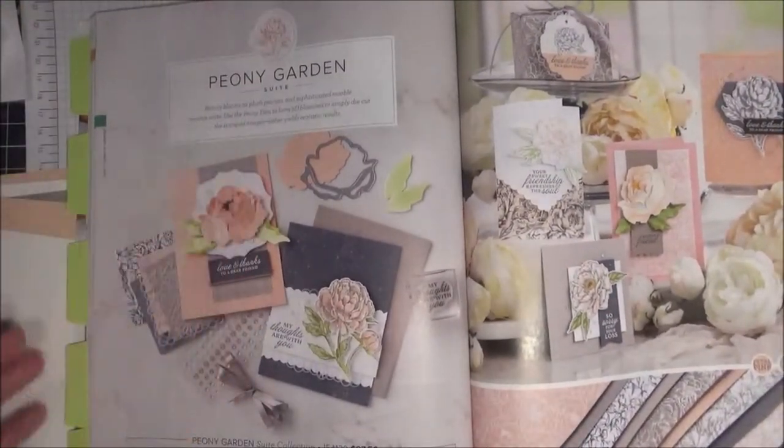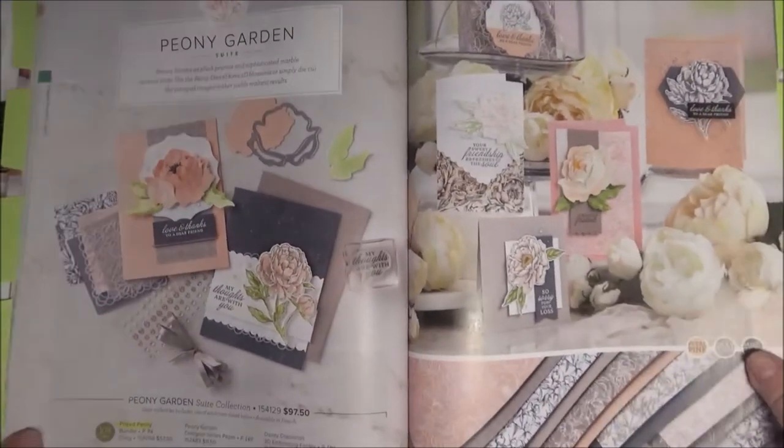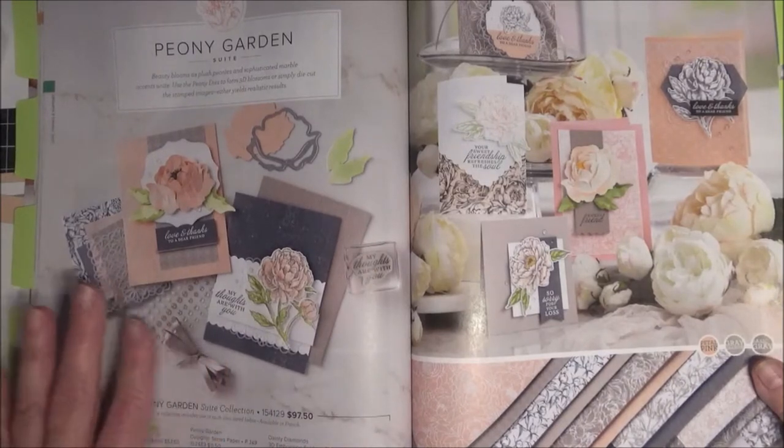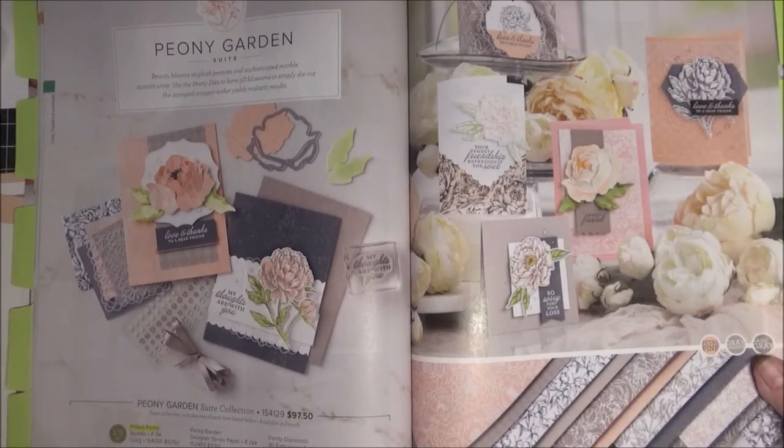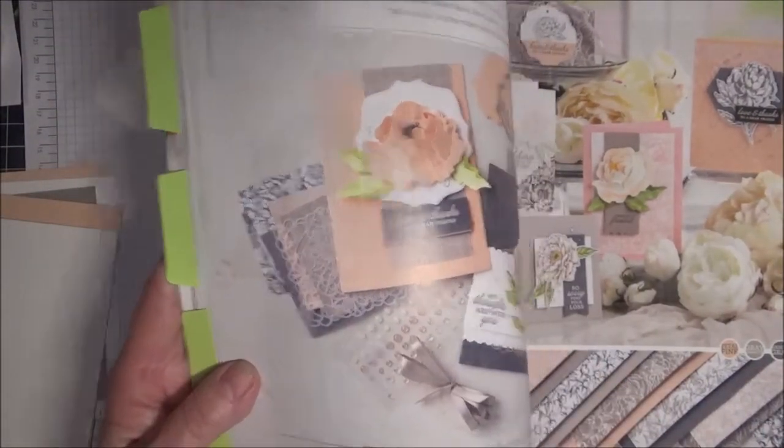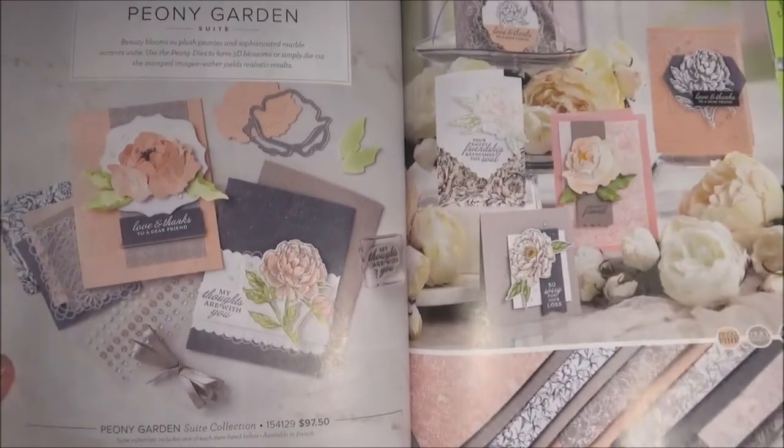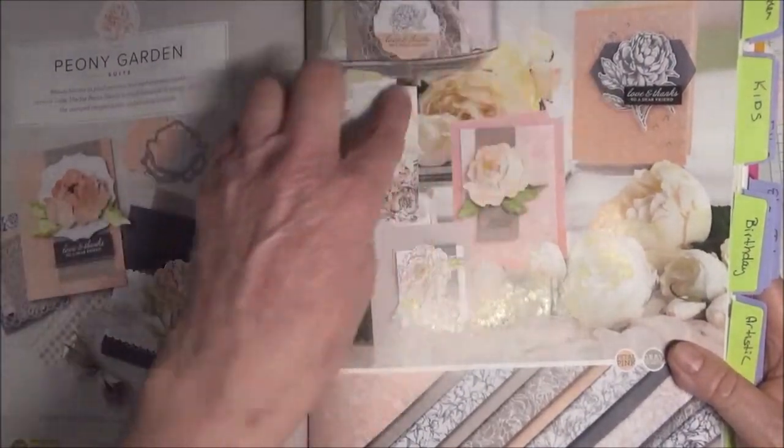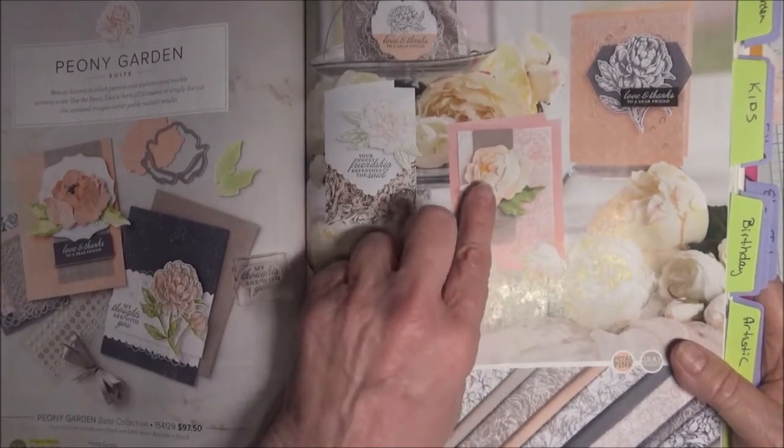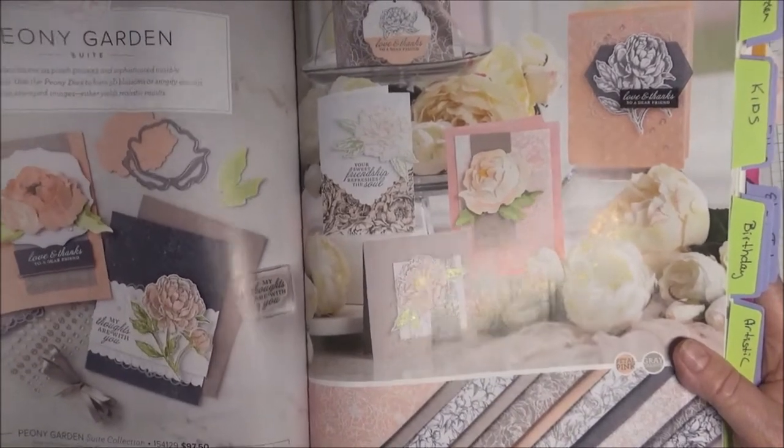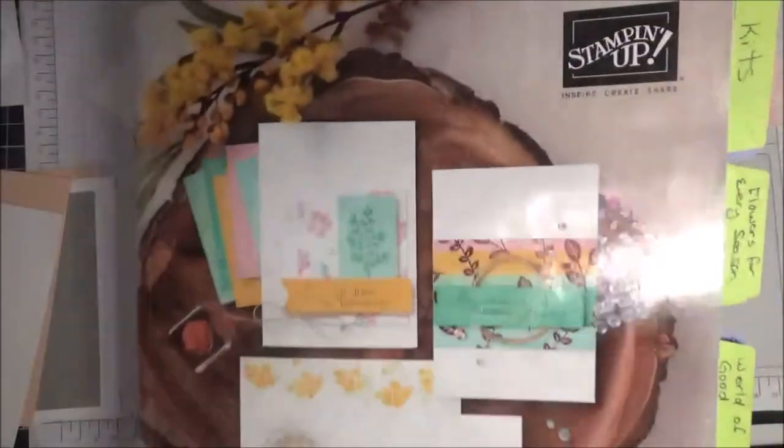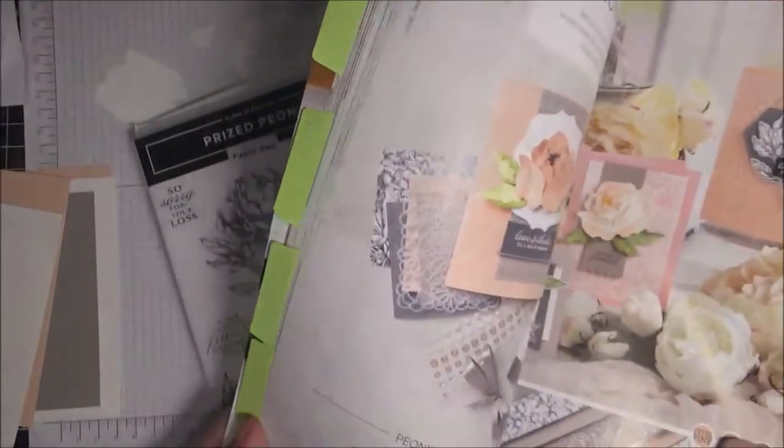It's called Peony Garden Suite, and it's got just absolutely gorgeous flowers and embellishments. It has some shimmery granite, gray granite ribbon, some vellum doilies, and these beautiful flower dies, and as well some gorgeous stamps. But today I'm going to be showing you this die for the peony, the 3D. I love 3D flowers, so I'm going to get started on that.